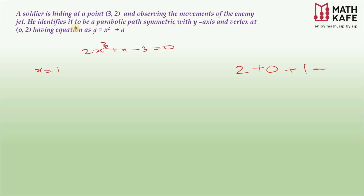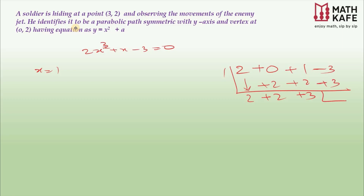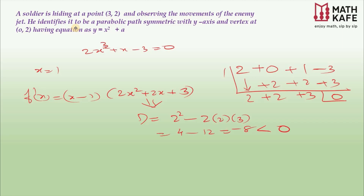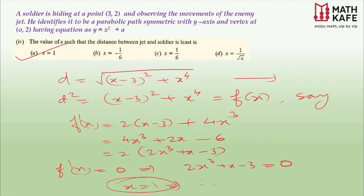Using synthetic division with root 1 and coefficients 2, 0, 1, −3: bring down 2; 2×1=2, 0+2=2; 2×1=2, 1+2=3; 3×1=3, −3+3=0. So f′(x) = (x − 1)(2x² + 2x + 3). The discriminant of 2x² + 2x + 3 is 4 − 24 = −20 < 0, meaning no other real solutions. Therefore x = 1 is the only critical point, and the answer is x = 1. This detailed working is shown in case it appears as a 5-mark board exam question.